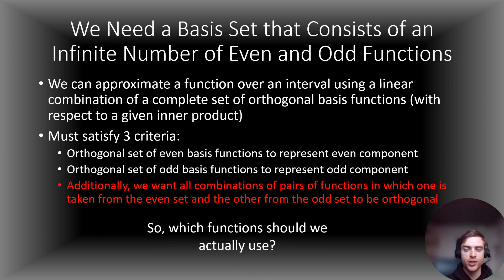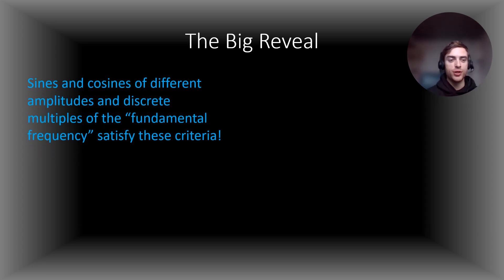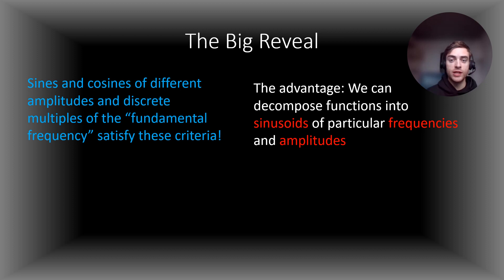So which functions should we actually use? Well, here's a hint. Nikola Tesla — the guy who invented so many electrical inventions — said that you want to think of the universe in terms of frequencies and vibrations. That should be your hint right there. And finally, we have the big reveal: we can use sines and cosines of different amplitudes and discrete multiples of what we will call the fundamental frequency to satisfy these three criteria. The advantage of doing this is that we can decompose a function into sinusoids of different frequencies and amplitudes, so we can think of the universe in terms of frequencies and vibrations, just as Nikola Tesla would want us to.